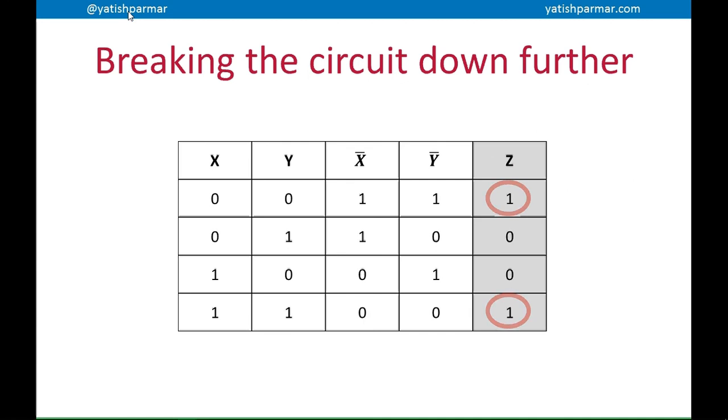Now what we're interested in are the two true outputs, where Z is 1. So when we look at those two rows where Z is 1, we can identify that we've got NOT X and NOT Y are also 1, so we can loop around those. And you can see anywhere else in that bottom row, we loop around any true values in there. We can see that X and Y are 1 in order to get an output of 1, Z=1.